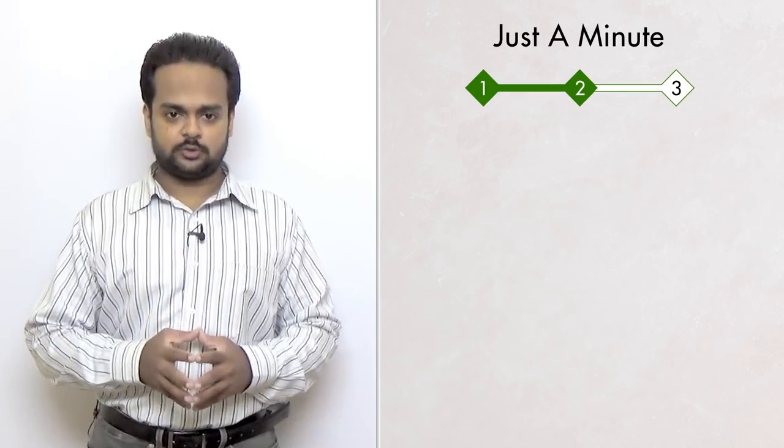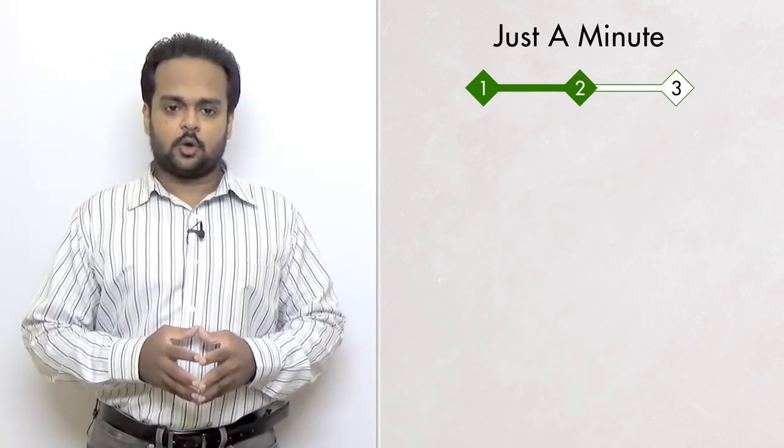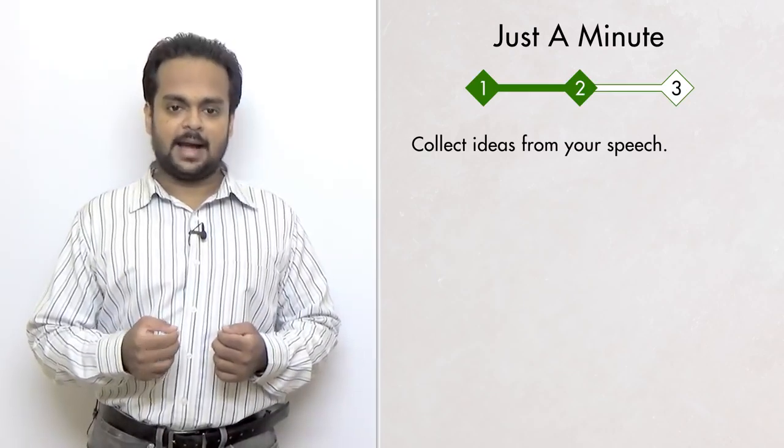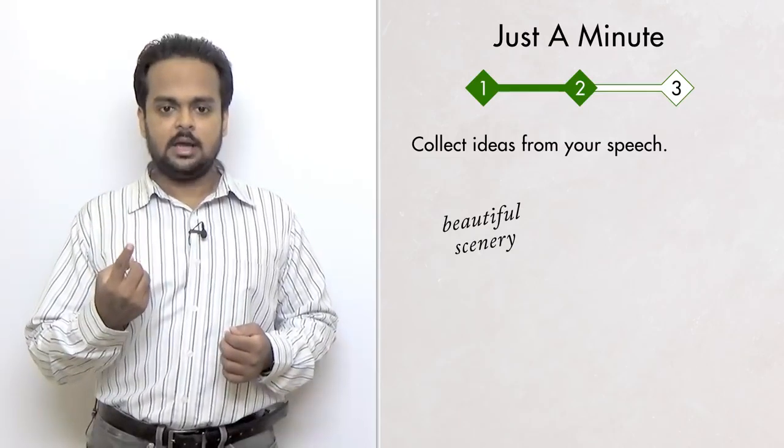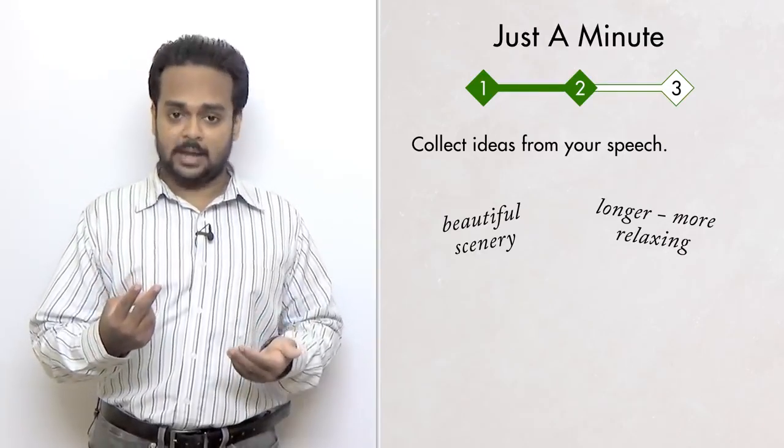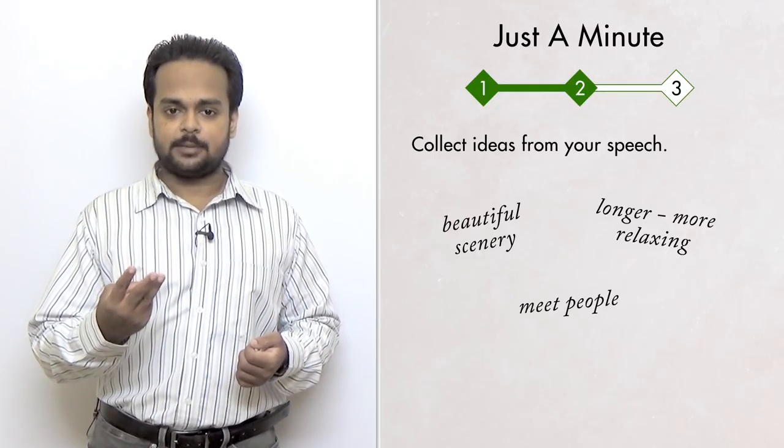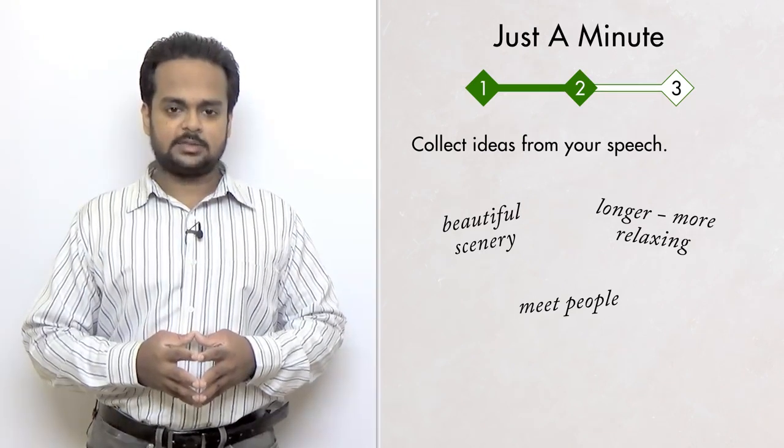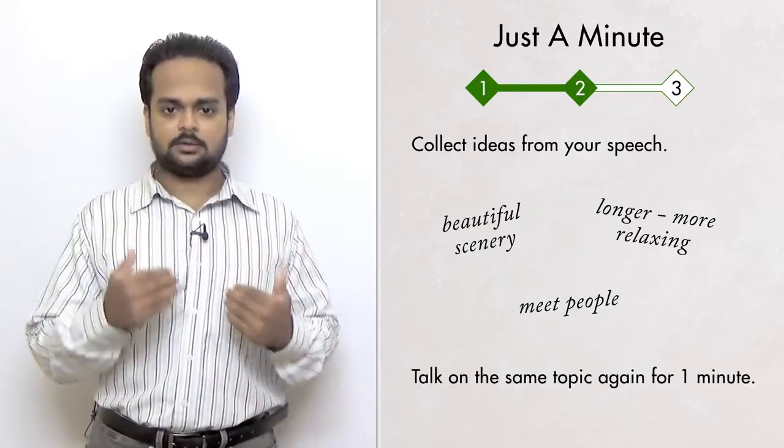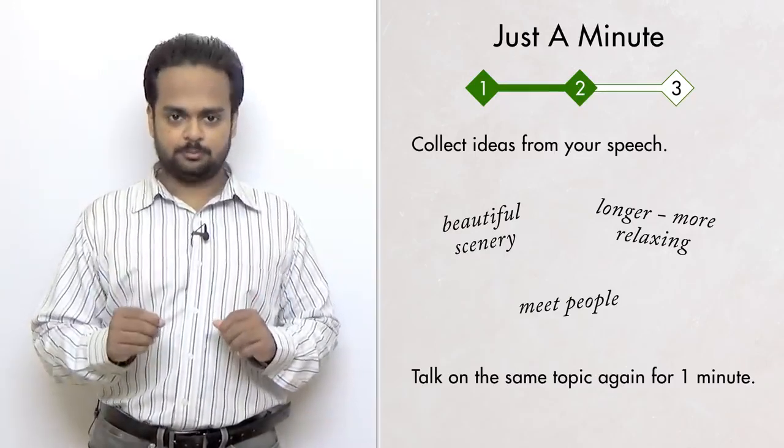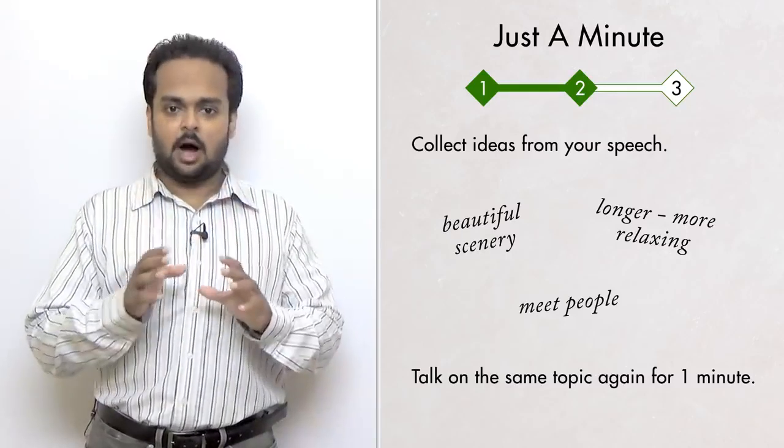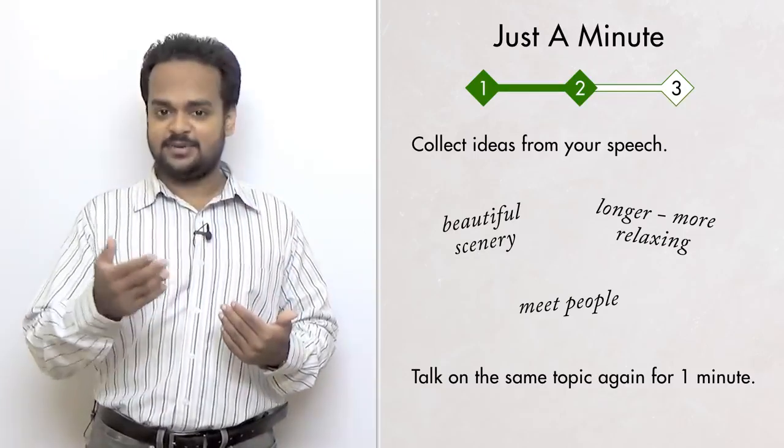The first part of stage two is making notes. So you can use a paper and pen now. And you're going to think back to the speech that you just gave and collect ideas that you came up with. In my speech, I remember that I had three ideas. The first was that on train journeys, you get to see a lot of beautiful scenery. The second idea was that train journeys are longer, so they're more relaxing. The third idea was that you get to meet interesting people and make friends. So once you have these ideas down, you're going to repeat the exercise. That means you're going to set your timer for one minute and you're going to speak again on the same topic. But now you can use your notes to guide you. You will notice that this time you are actually able to speak more fluently because you have some good ideas on paper and you will be able to expand on your ideas and give more information.